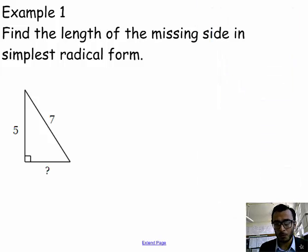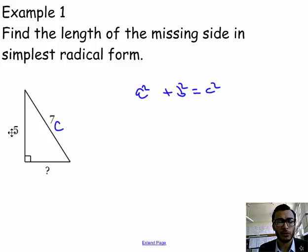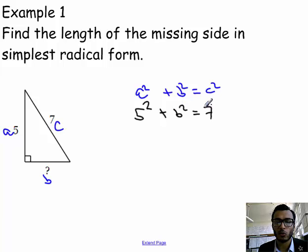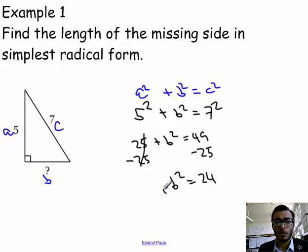Here's our first example: find the length of the missing side in simplest radical form. Using the Pythagorean theorem, A squared plus B squared equals C squared — remember, C is always the hypotenuse and the legs are A and B. Substituting, we get 5 squared plus B squared equals 7 squared, which is 25 plus B squared equals 49. Subtracting 25 from both sides gives B squared equals 24.